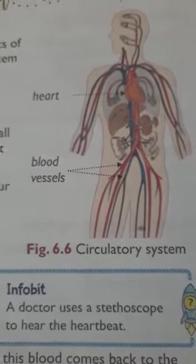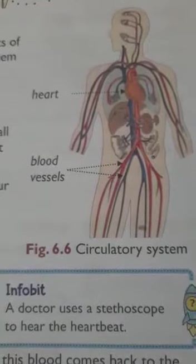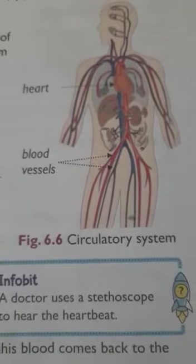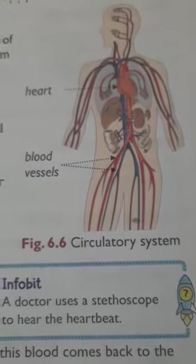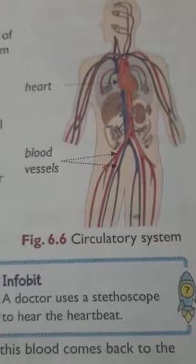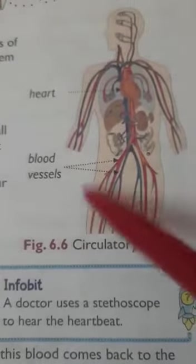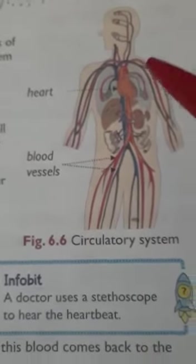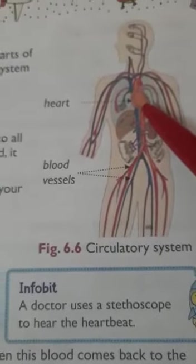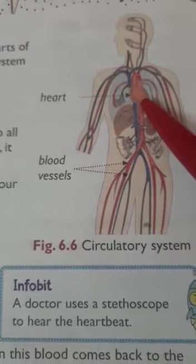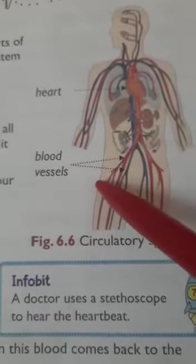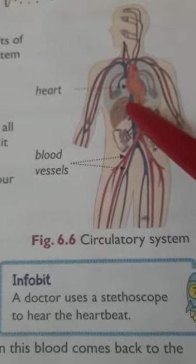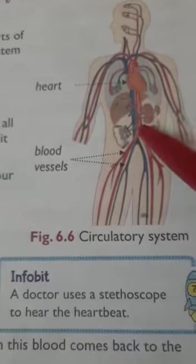The transport of nutrients and oxygen is carried out by the circulation of blood. The parts involved are heart, blood, and blood vessels. Through blood vessels, blood goes to all parts of the body. The heart is an organ in our chest — you can see it as the orange-colored part in the diagram. It pumps blood to all parts of our body.